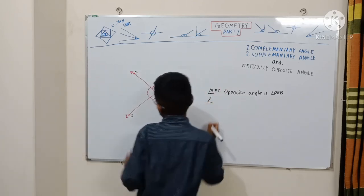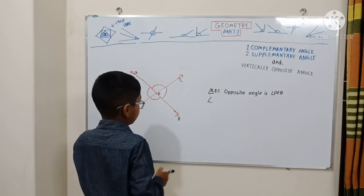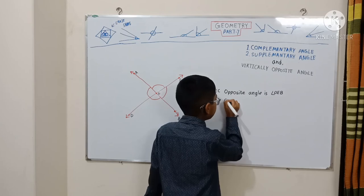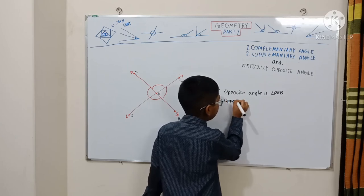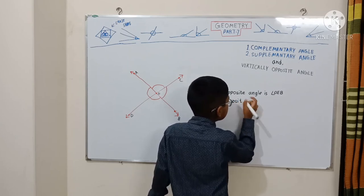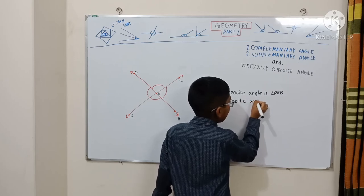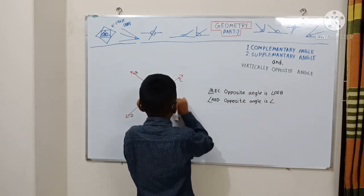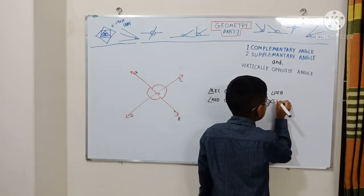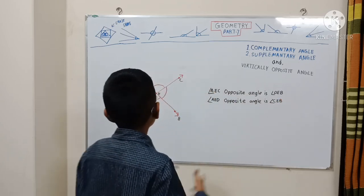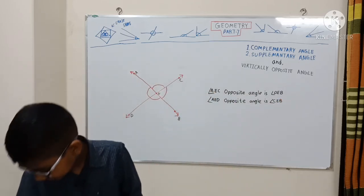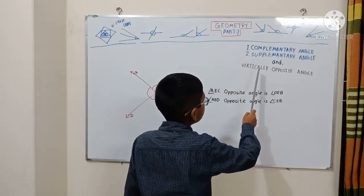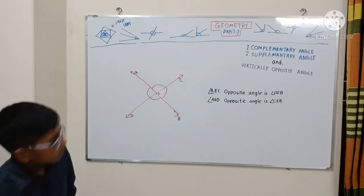Here we have angle AED. Its opposite angle is angle CEB. So today we've learned about a lot of stuff: complementary angles, supplementary angles, and vertically opposite angles, which is very new.